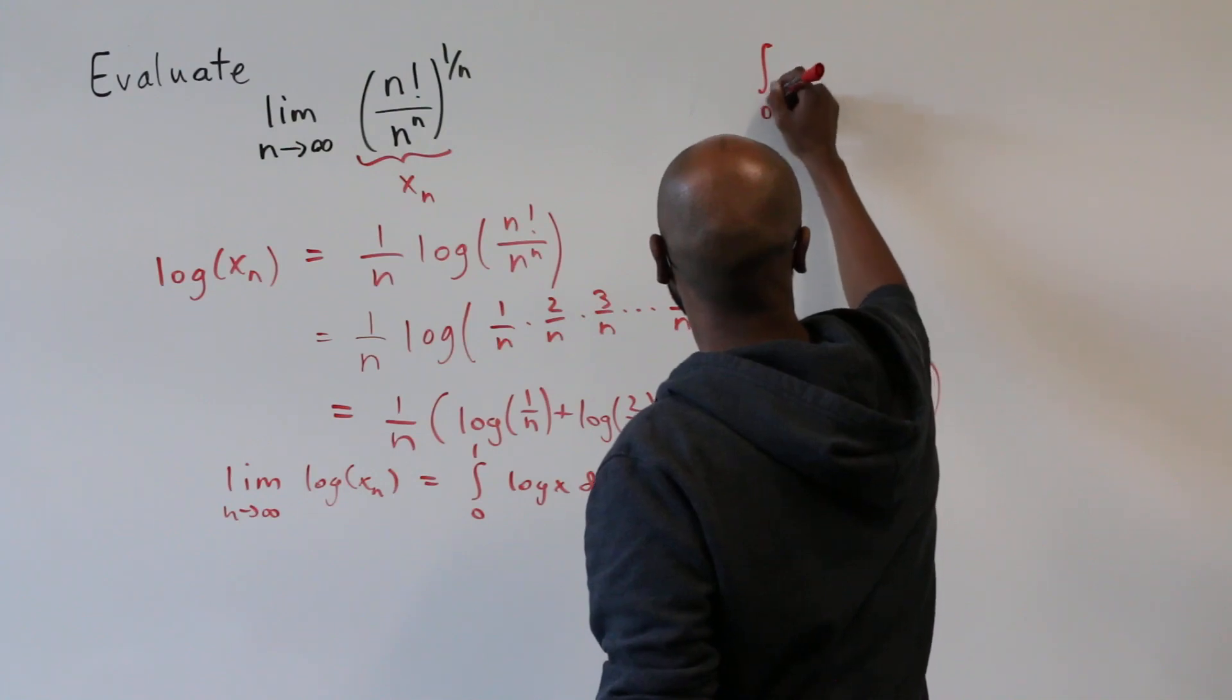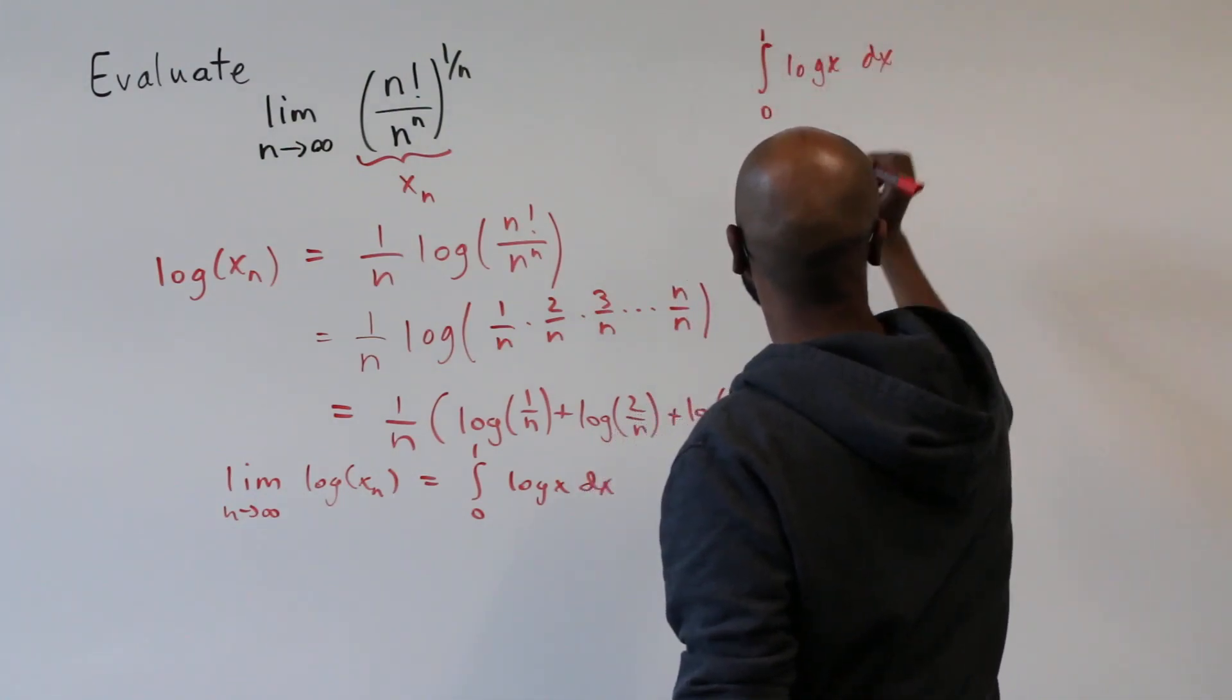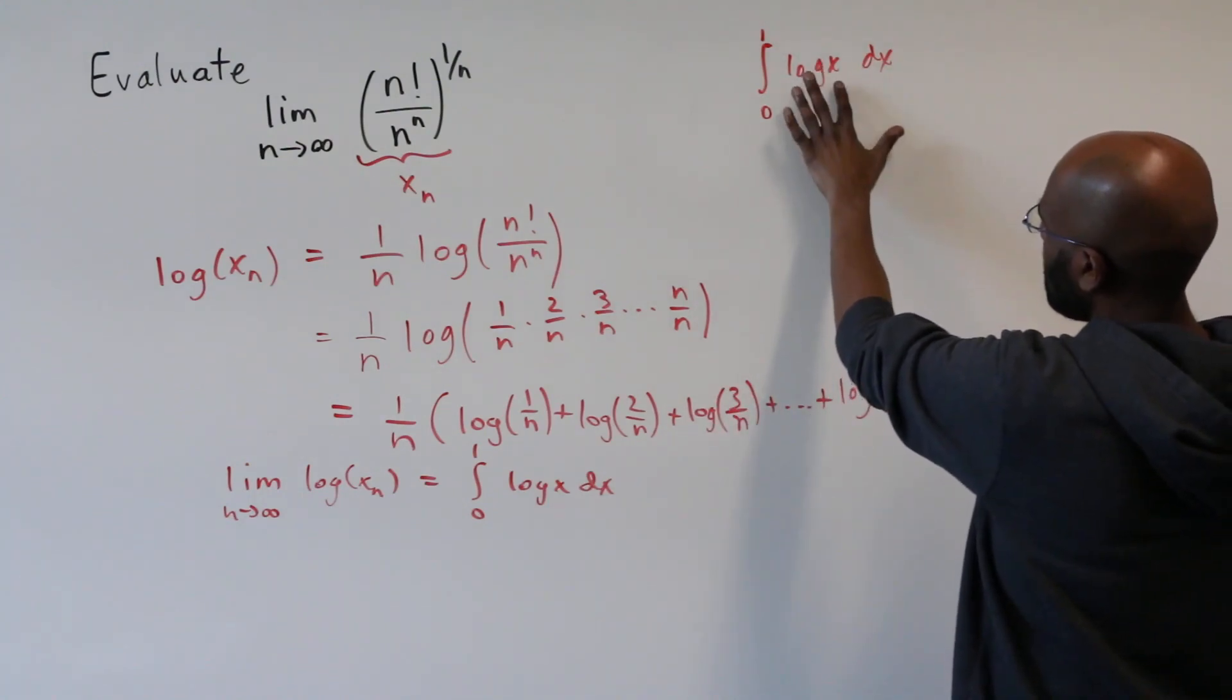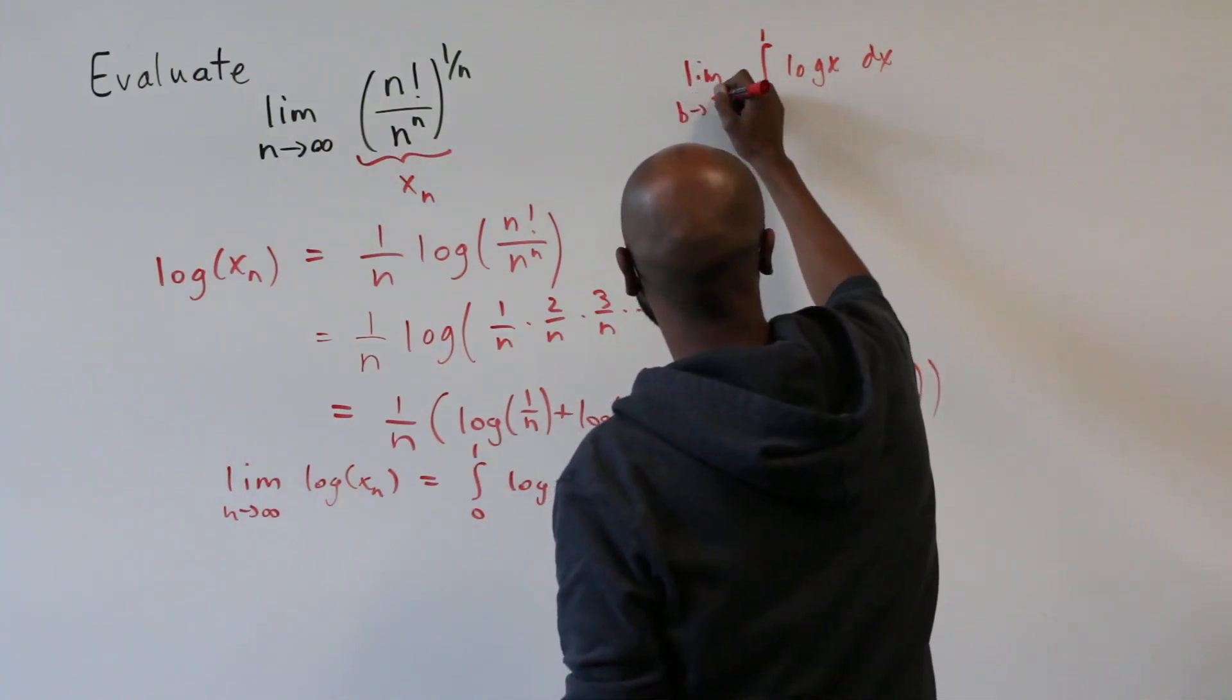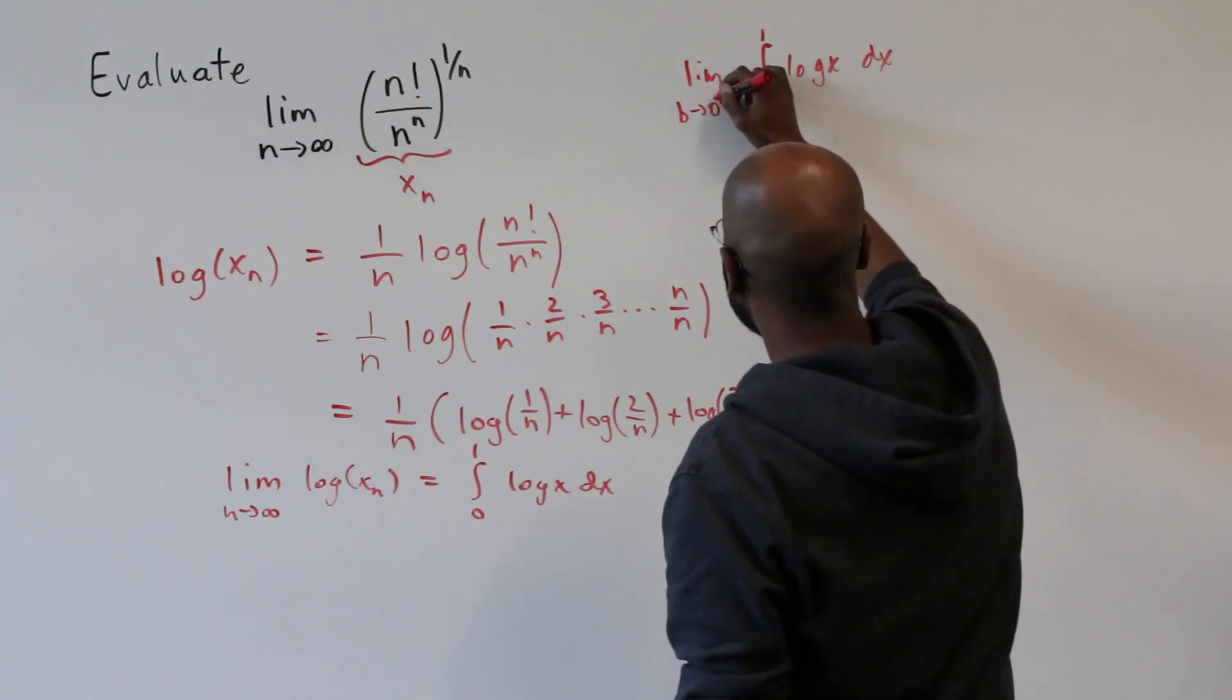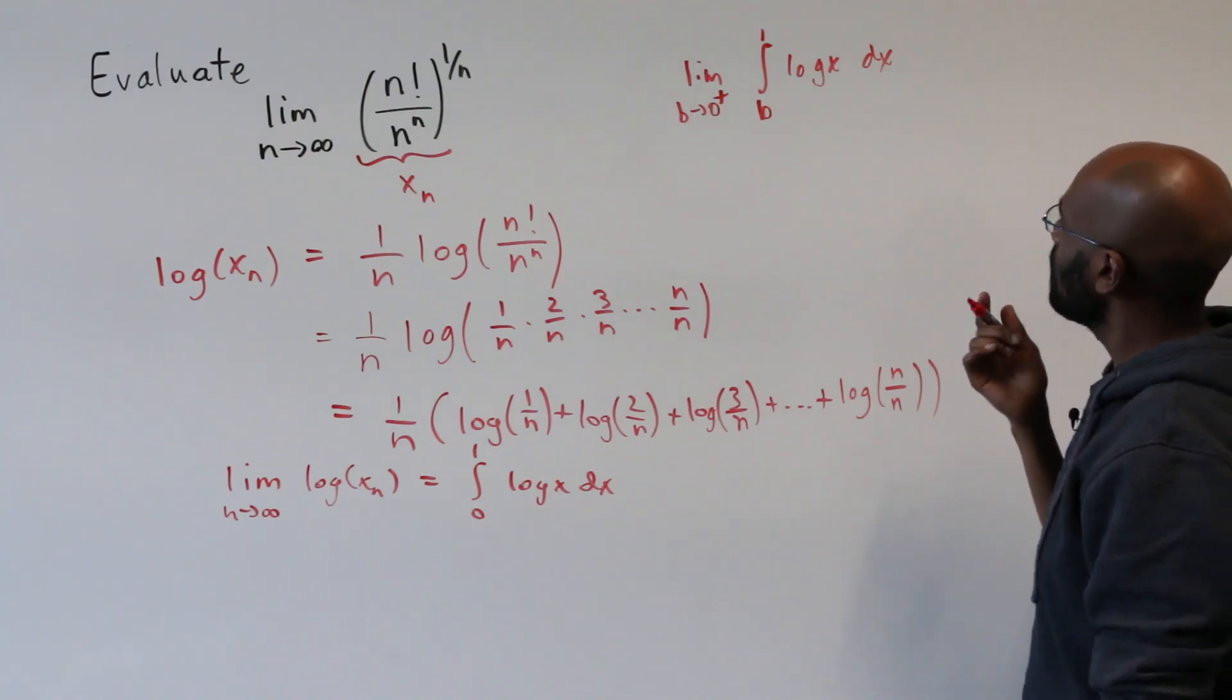Okay, so we want to compute the integral from 0 to 1 of log x dx. Now the problem is, as x goes to 0, this thing goes to negative infinity. So we should really let this be b and take the limit as b goes to 0, but not just 0 because the function is not defined as left of 0. We should go 0 from the right.